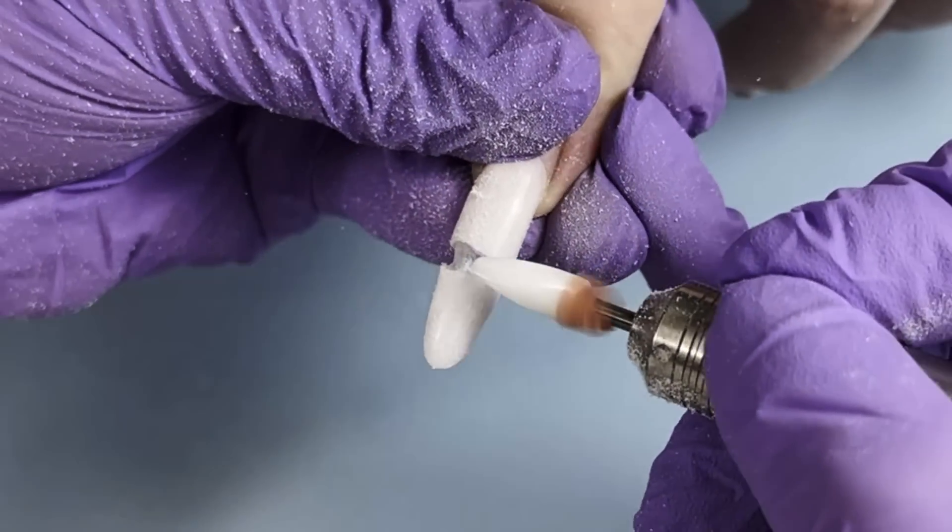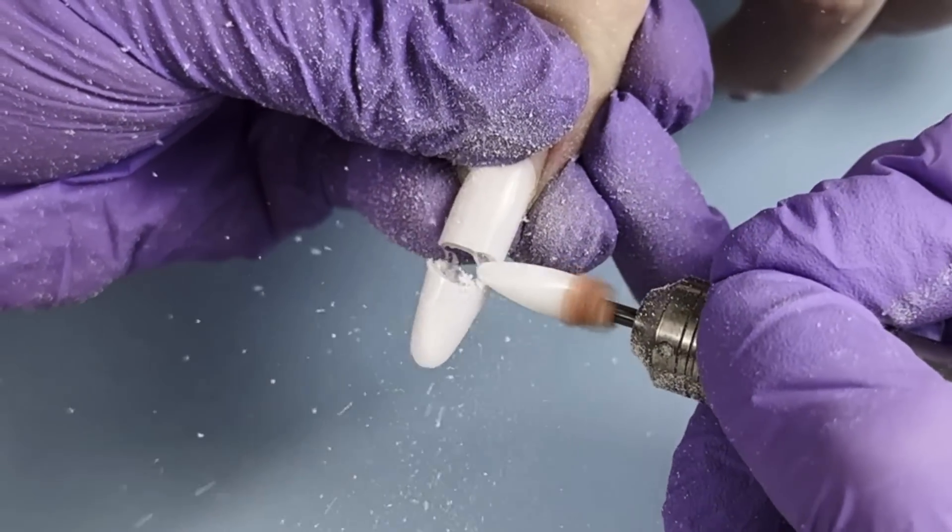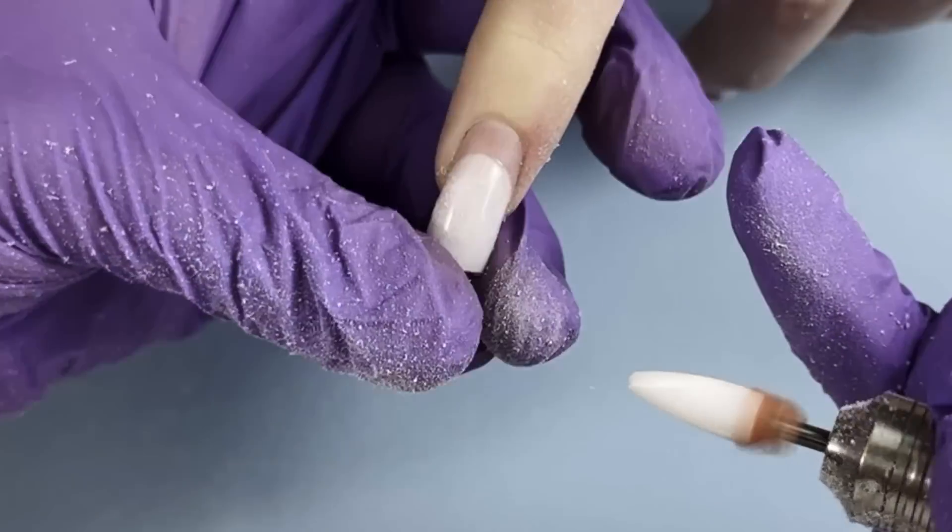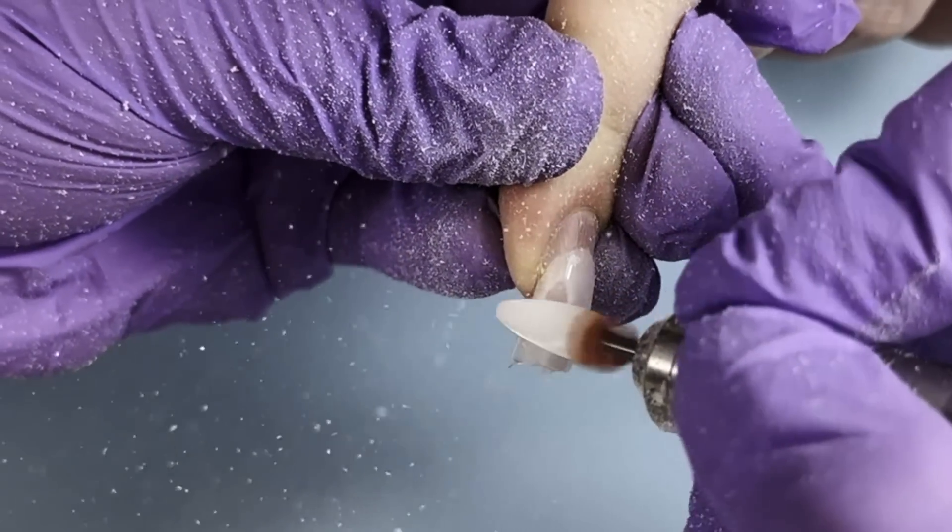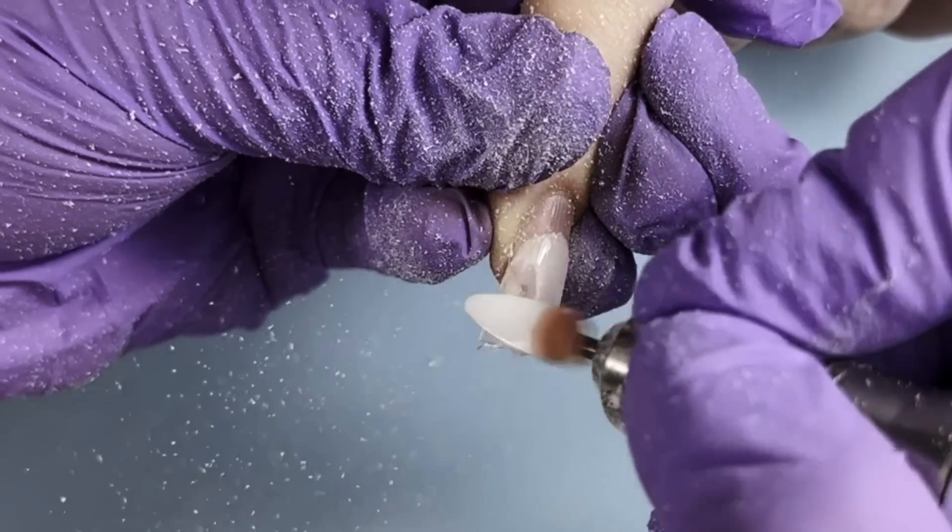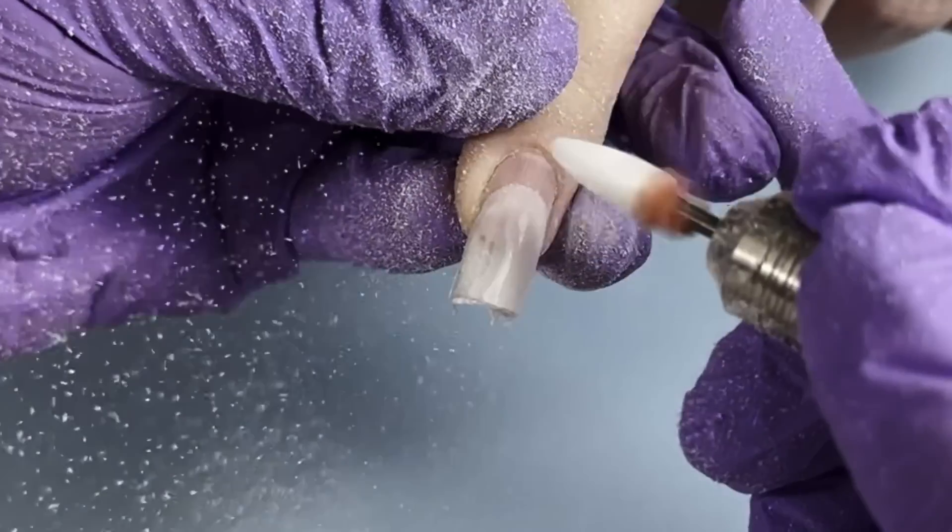So I'm going to file off the free edge first, but make sure that I'm not touching the natural nail because we are going to keep it. And then we need to get rid of the product from the top. I think it was poly gel. I'm using ceramic bead.